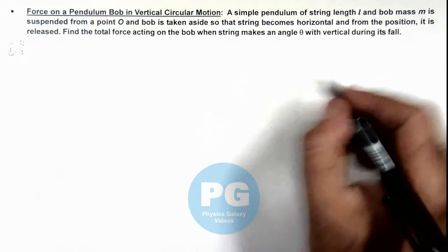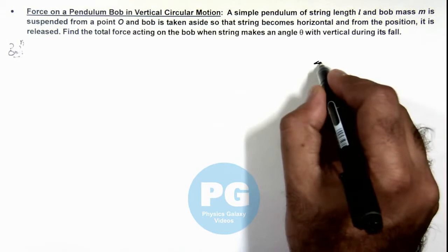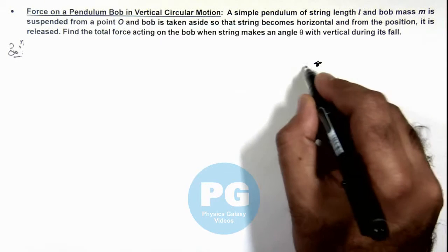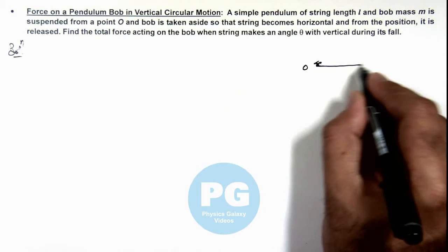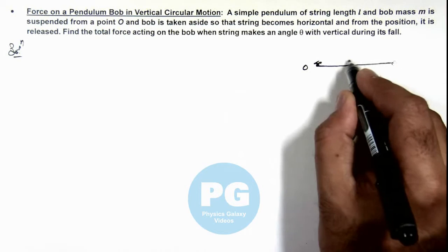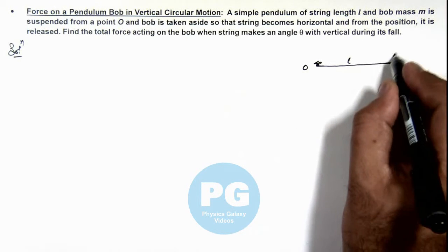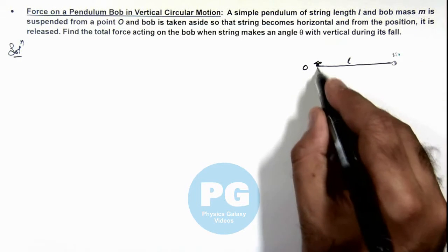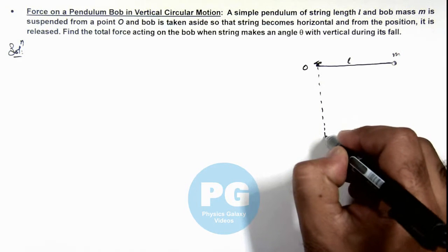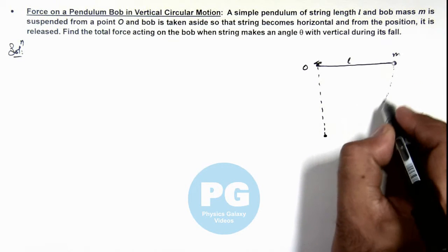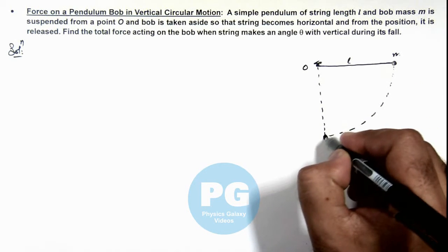Here in this situation, we can draw the picture. From point O a pendulum is suspended, and the string is taken aside. This length is l and bob mass is m. When it is released, it starts falling in a circular path to reach the bottommost position.